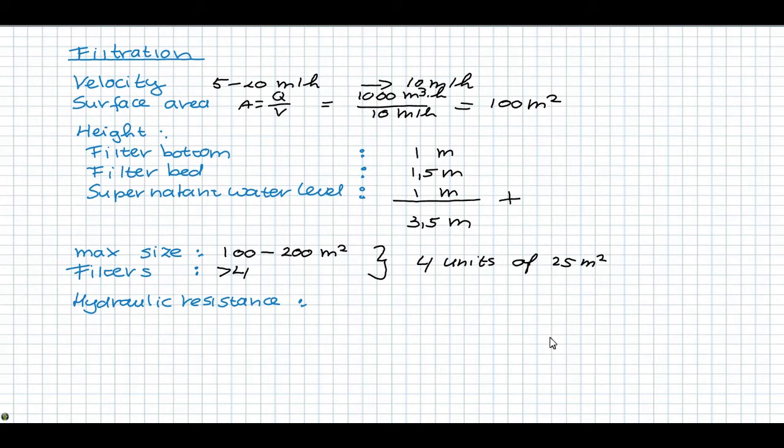During filtration the filters get clogged and the hydraulic resistance over the filter increases. This can be up to 1 meter depending on your preference. In practice we take a maximum equal to the level of supernatant water of the filter to avoid the filter from running dry. So in this case this is 1 meter.